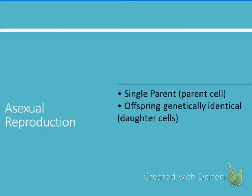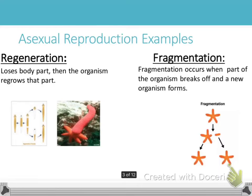In asexual reproduction — this should be at the very top of your page — asexual reproduction occurs by a single parent, and that's called a parent cell, and produces offspring that are genetically identical. Those two genetically identical cells are called daughter cells. Some examples of asexual reproduction are regeneration, binary fission, budding, and fragmentation, and we're going to talk about those individually.